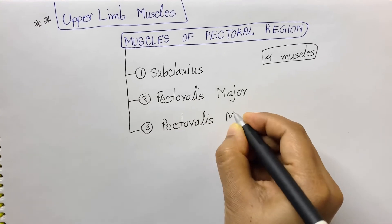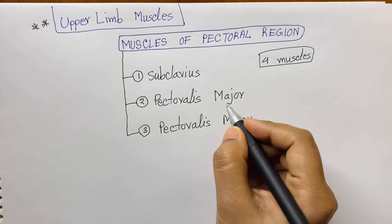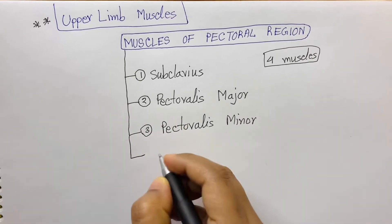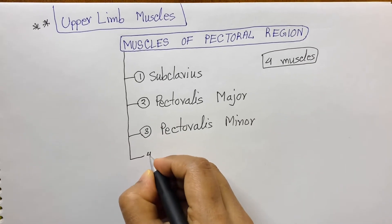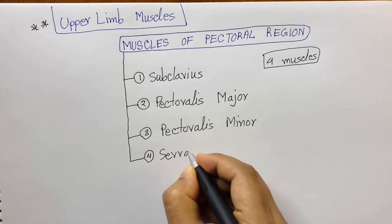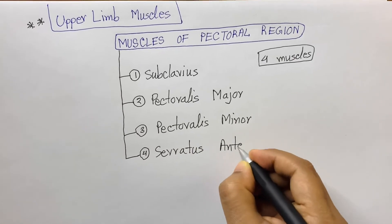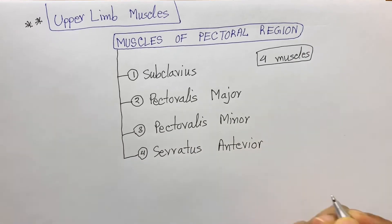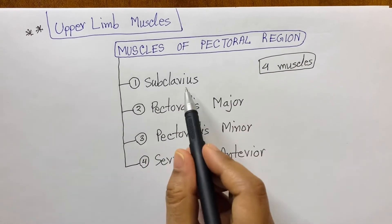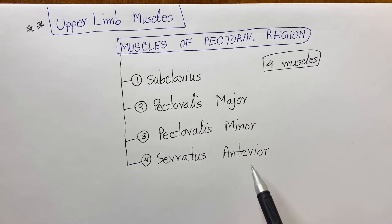Pectoralis minor, which is smaller than pectoralis major, hence the name pectoralis minor. The last muscle of our pectoral region is serratus anterior. So these are the four muscles of our pectoral region: subclavius, pectoralis major, pectoralis minor, and serratus anterior.